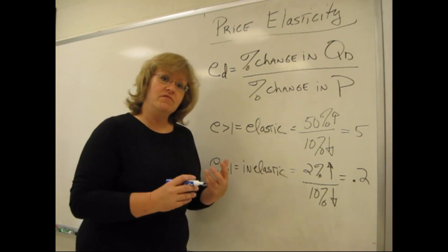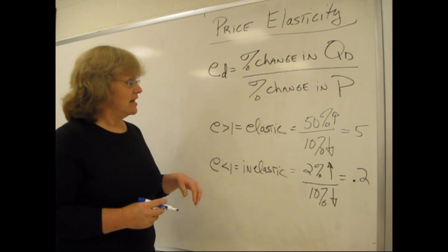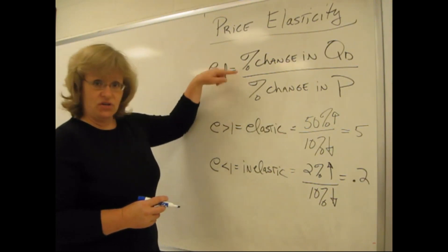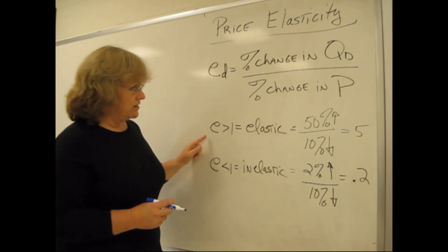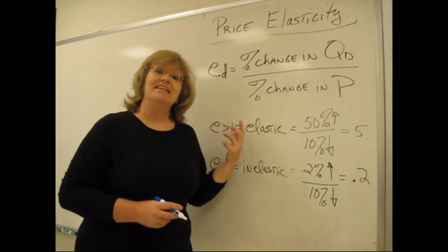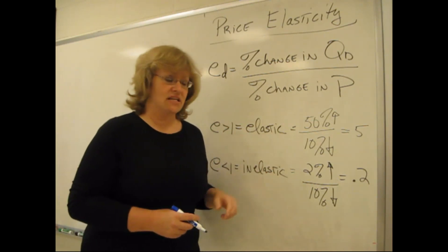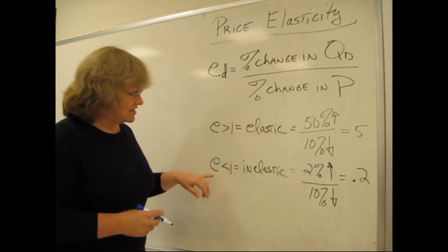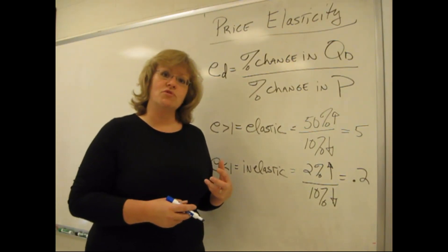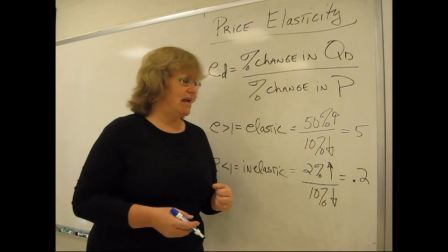We have a couple of different categories here, and they're really kind of easy to understand. If the number you get when you calculate this ratio is greater than one, we say that it's an elastic demand or an elastic response. If the number turns out to be less than one, we say that the response is inelastic or that demand is inelastic.